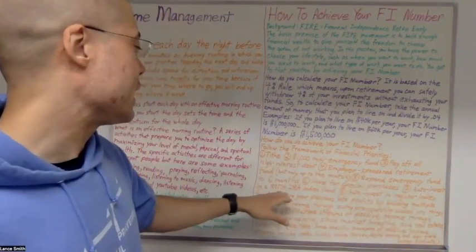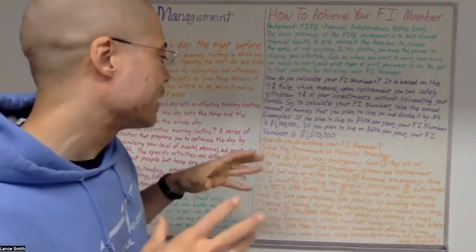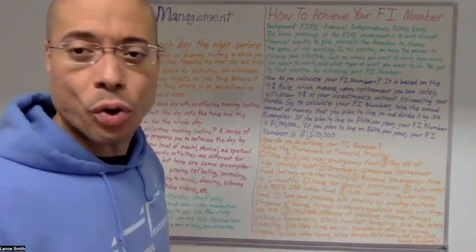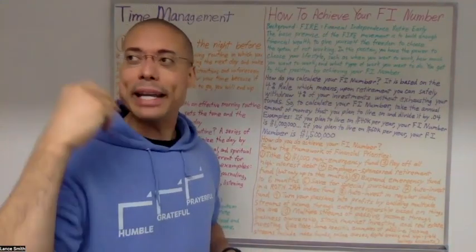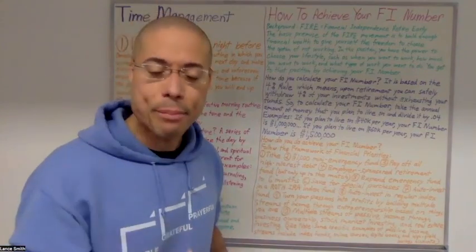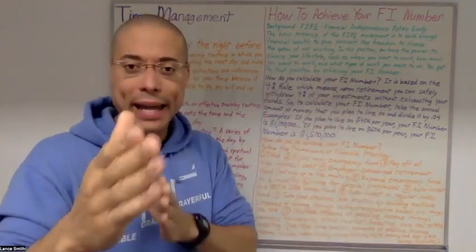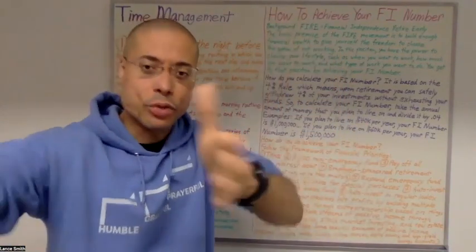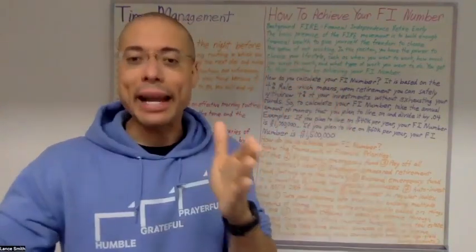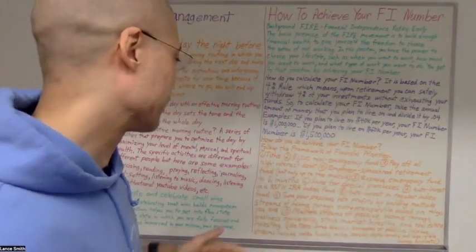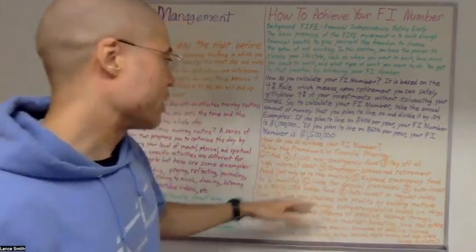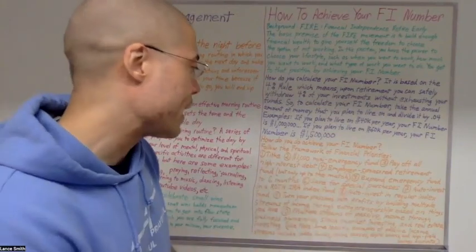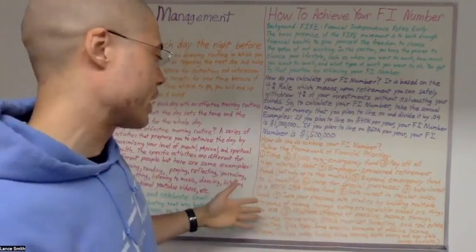Number seven: auto-invest in a Roth IRA index fund. It's important to automate your investing so it happens automatically from your checking account right into your mutual fund account each month without having to think about it. Number eight: auto-invest in a regular index fund.